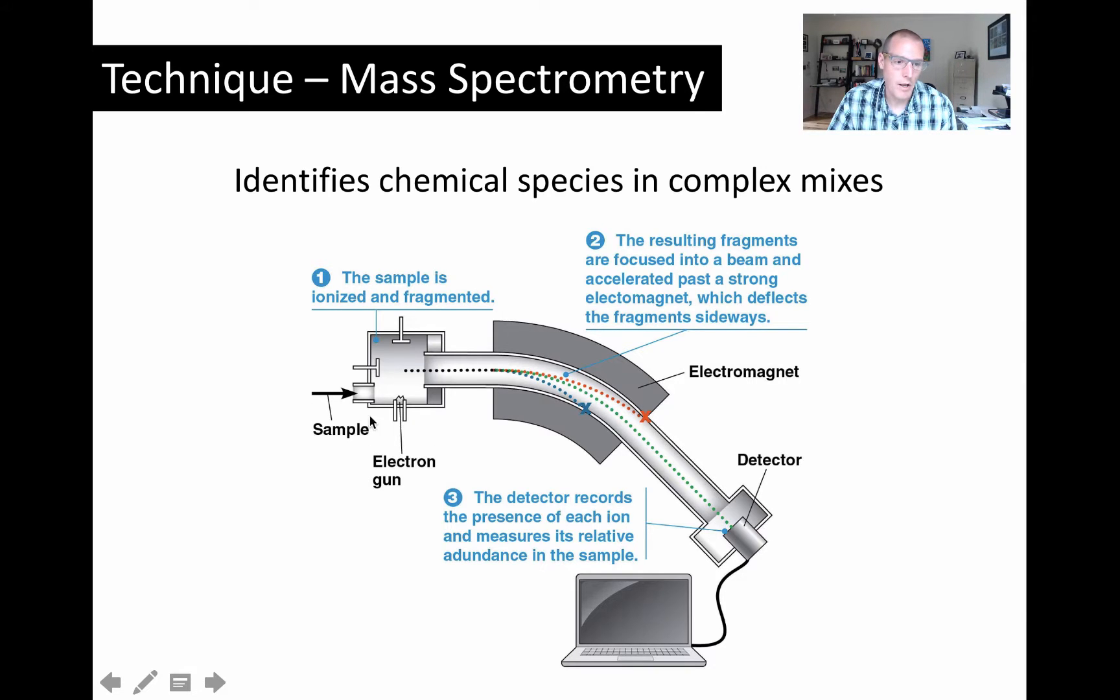If we take this sample and inject it into the chamber of the mass spectrometer, I'm going to call it a mass spec to make it easier. When the sample goes into the chamber, it's bombarded by a beam of electrons from an electron gun in that chamber.